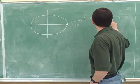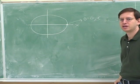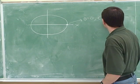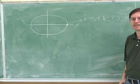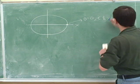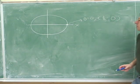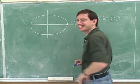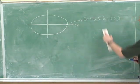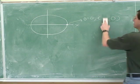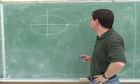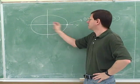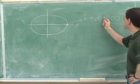What would be the x and y coordinates at this point? The x-coordinate is one and y equals zero. Remember, because this is the unit circle, if we're just horizontal from the origin, we must be a distance of one from the origin. So this point would be (1, 0).